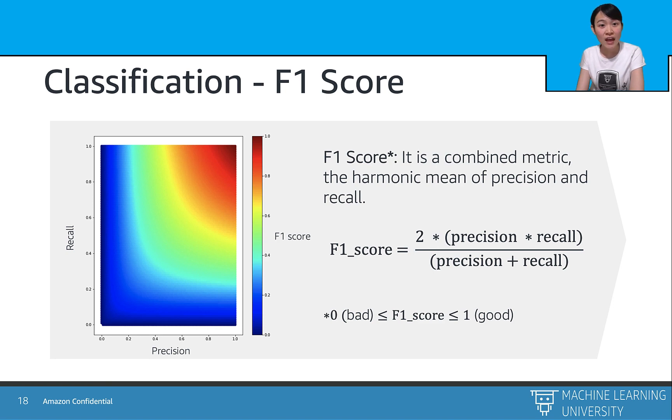The precision and recall matrix always work together as evaluation matrix. However, two matrices might be a little bit difficult for us to compare between different model performance. And that is why we need the F1 score, which is the harmonic mean of precision and recall. So similarly, F1 is a number between 0 and 1.